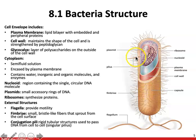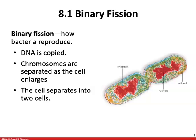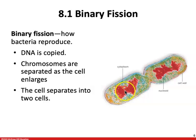There is also a conjugation pili, a rigid tubular structure used to pass DNA in the form of plasmids between cells. Bacteria reproduce through binary fission — an asexual process where the cell clones itself and divides. The circular chromosome is copied, chromosomes separate as the cell enlarges, and the cell divides into two. Some bacteria can double their numbers every 20 minutes under favorable conditions.